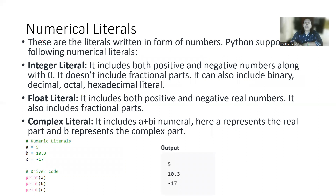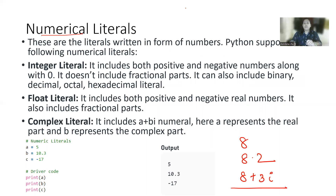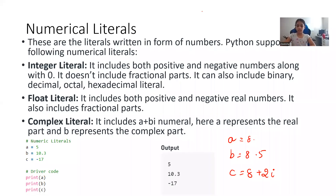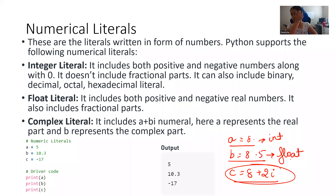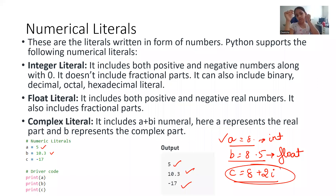Numeric literal means numbers can be our whole number, decimal number, or you can take it as a complex number. Our numeric literals: this is your whole number, this is your decimal number, this is your complex number. The whole number we always write with the data type int. For decimal number we use data type float. The way we are writing it — just like here we have written 5 and 10.5 — the same way it is showing here also. It means it is not changing, and if it is not changing then it becomes a literal.